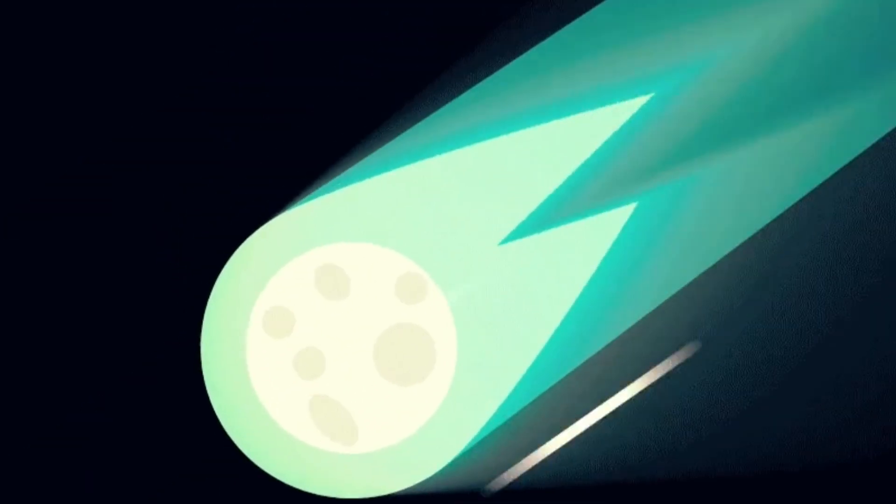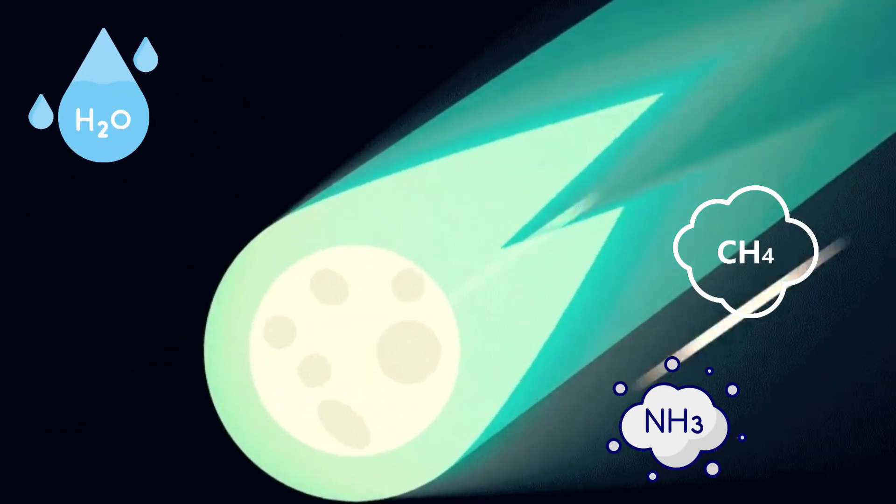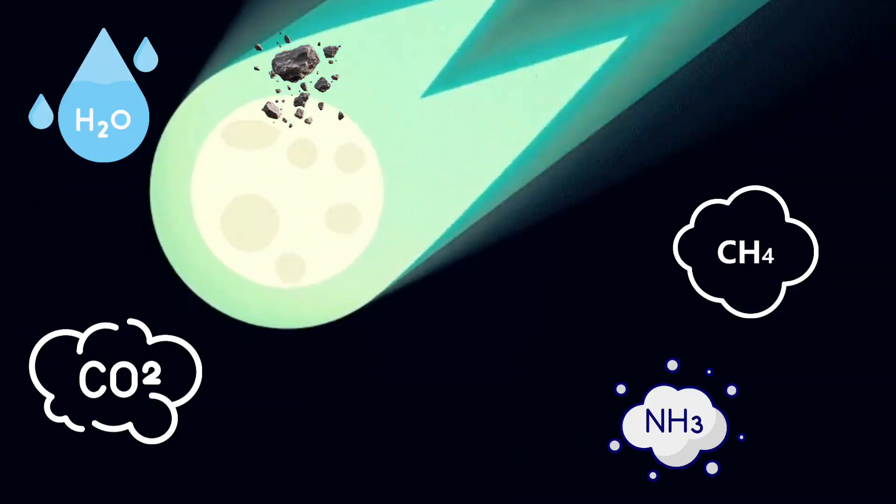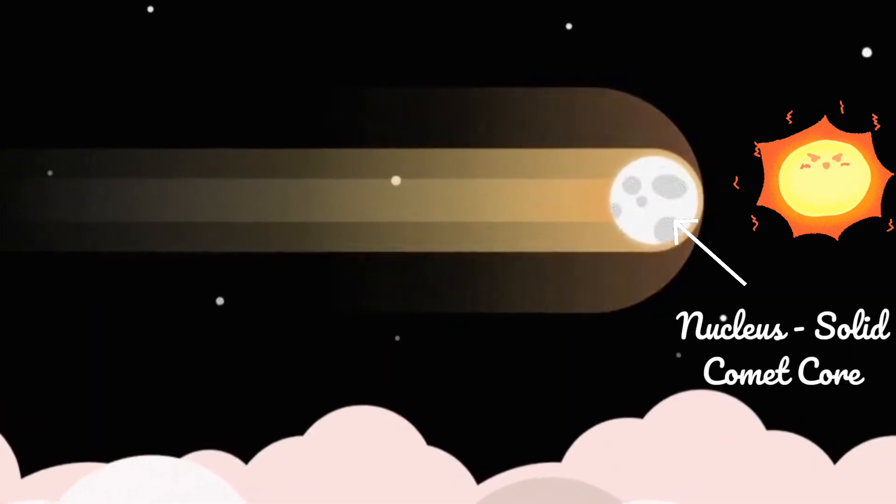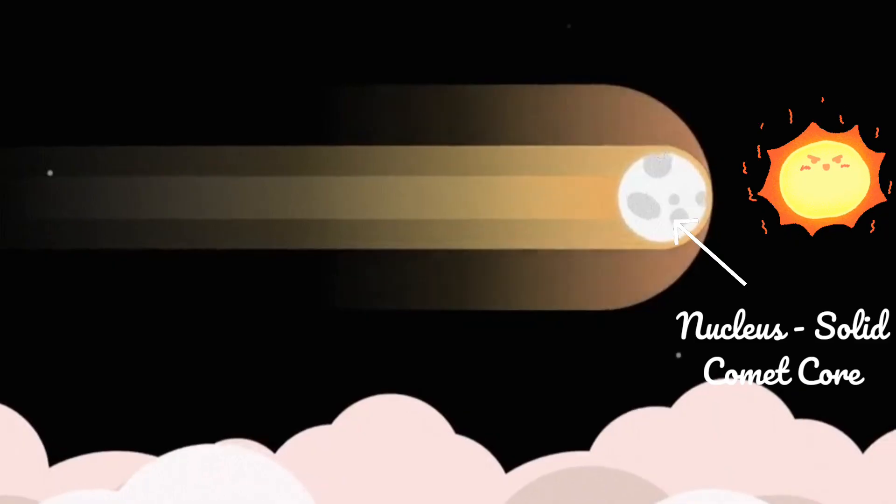It's a comet. Think of it as a frozen cosmic cocktail made of water, ammonia, methane, carbon dioxide and a bit of rocky dust sprinkled on top. When it gets close to the sun, it starts to heat up, releasing gas and forming a glowing coma.